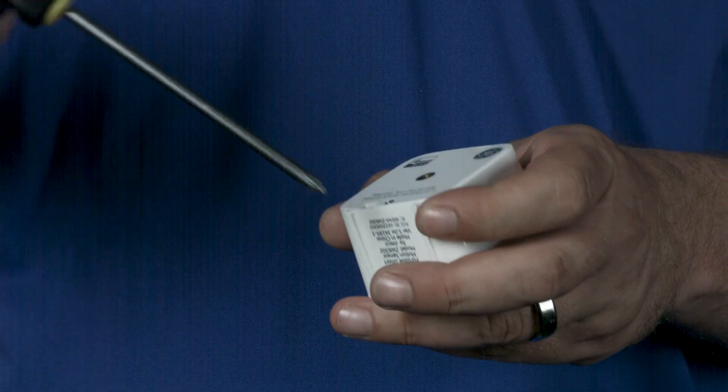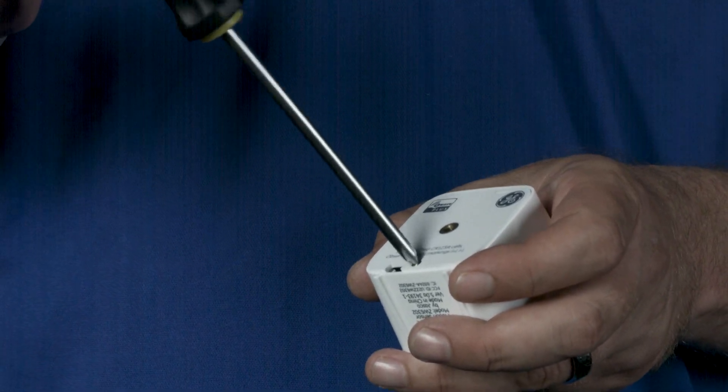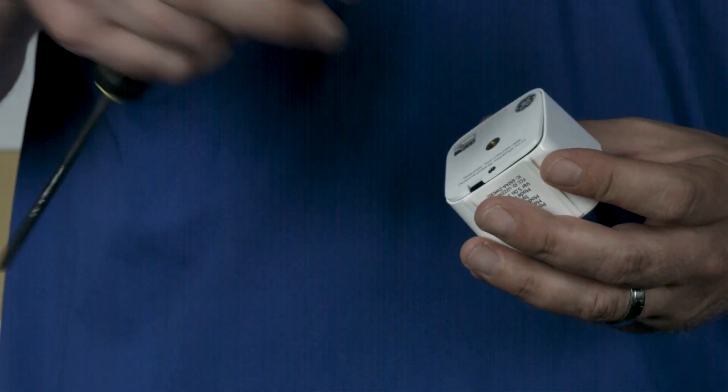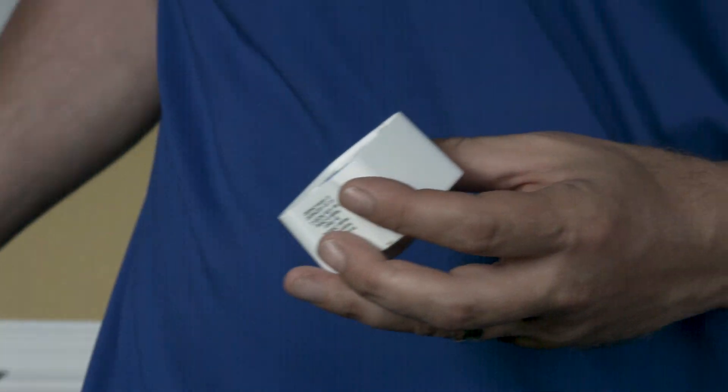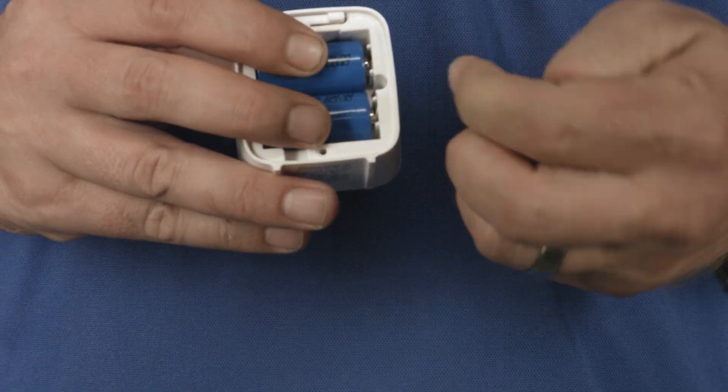Regardless of which power source you choose, start by removing the screw securing the battery door. Two CR123A batteries are included. To activate the sensor using battery power, hold the batteries in place and remove the plastic tabs.